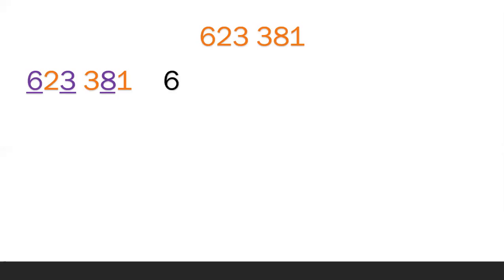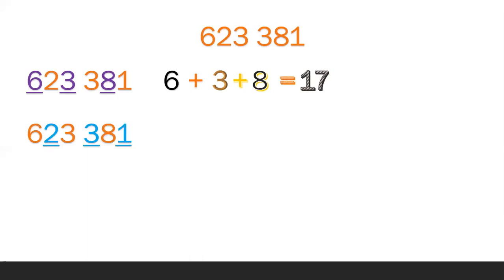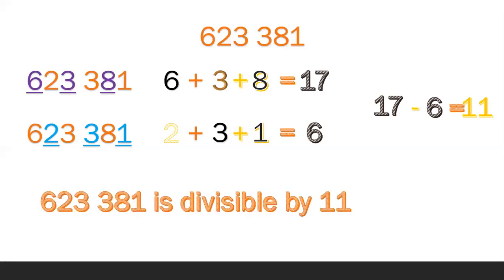Another example: 623,381. The digits in the odd places are 6, 3, and 8. Get the sum: 6 plus 3 plus 8 equals 17. The digits in the even places are 2, 3, and 1. Get the sum: 2 plus 3 plus 1 equals 6. Get the difference of their sums: 17 minus 6 equals 11. Therefore, 623,381 is divisible by 11.